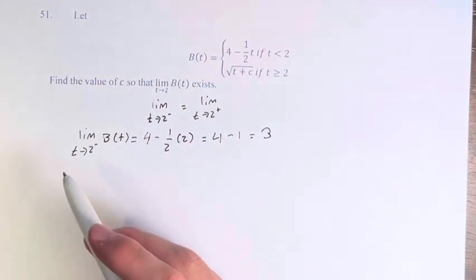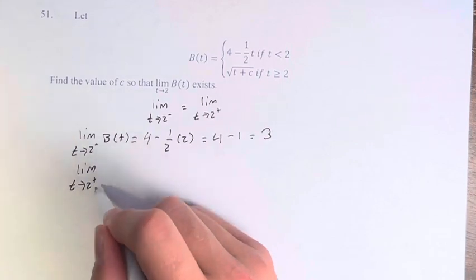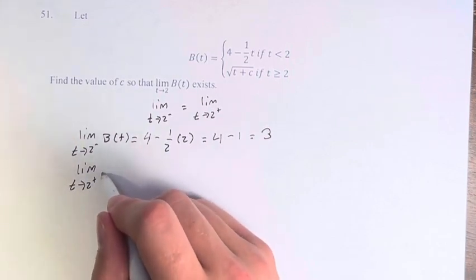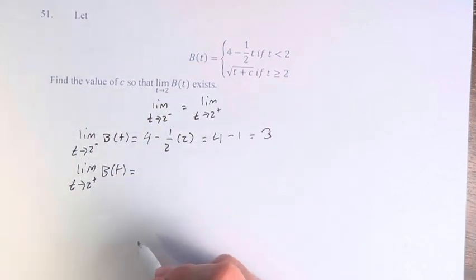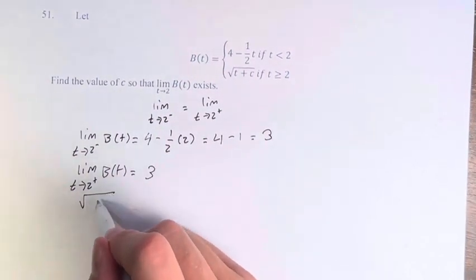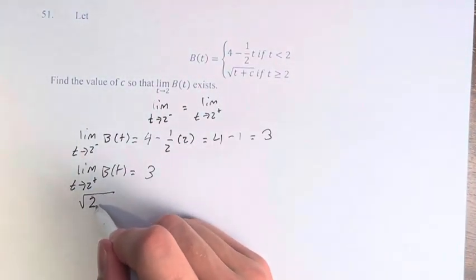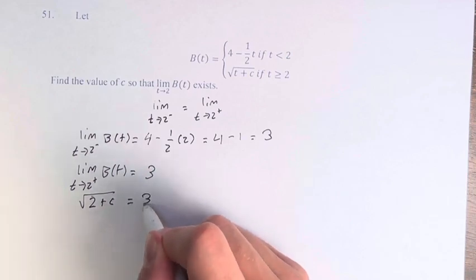And the limit exists if, as we approach 2 from the right, B(t), if this also equals 3. So if the square root of, using this one for values greater than 2, 2 plus c equals 3.